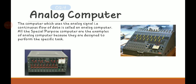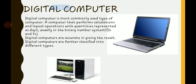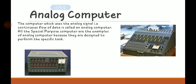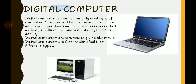Now let's come to analog computers. The computer which uses the analog signal — that is, a continuous flow of data — is called an analog computer. All special purpose computers are examples of analog computers, because they are designed to perform specific tasks. So all analog computers perform specific tasks, which is why they are also called special purpose computers.